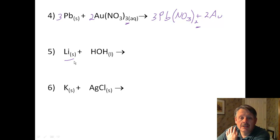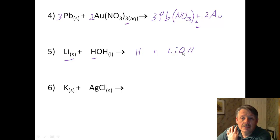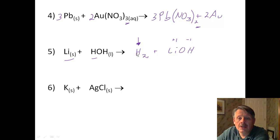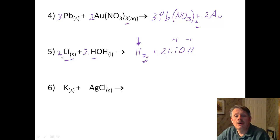Number 5: lithium is the most active thing on the activity series, so it is definitely going to replace the hydrogen with the OH. We get hydrogen coming off and lithium hydroxide. Lithium hydroxide: Li is +1, OH is −1, they cancel each other out. Remember, hydrogen is a diatomic element, so it is always H₂. We need 2 LiOH because of the 2 for H₂, so we need 2 OHs and 2 lithiums — we are now balanced.